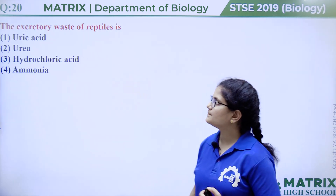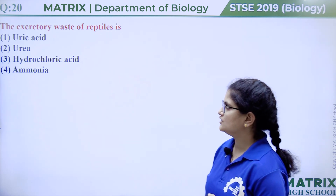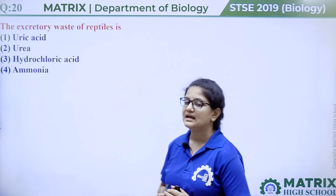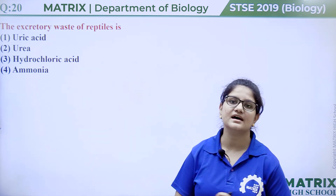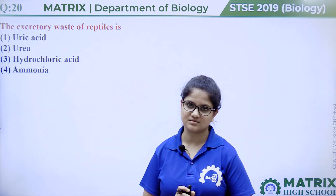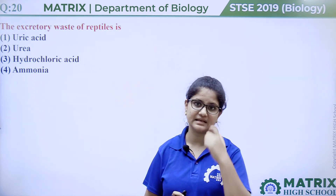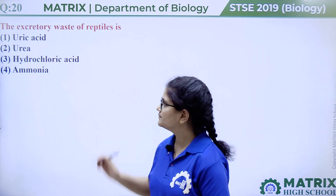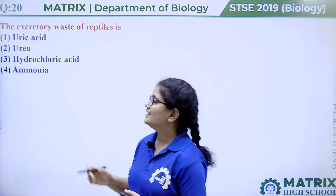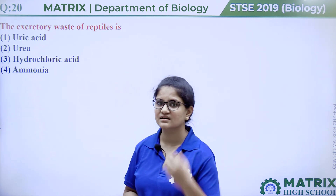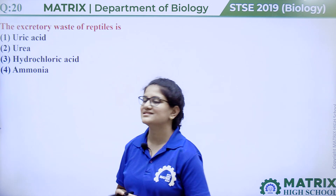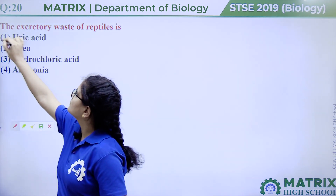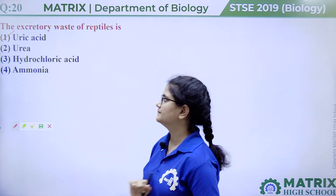Question number twenty: the excretory waste of reptiles is uric acid, urea, hydrochloric acid, or ammonia. Reptiles are uricotelic organisms, meaning they excrete uric acid as their waste, in the form of a thick paste which requires less water. So the answer is option one, uric acid.